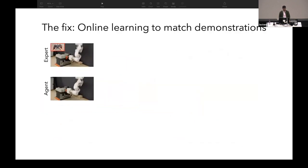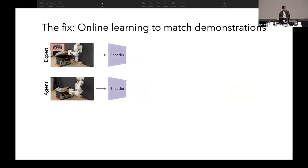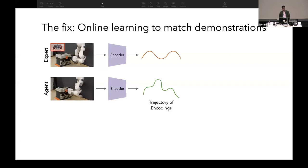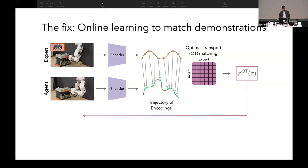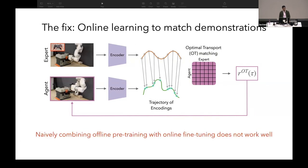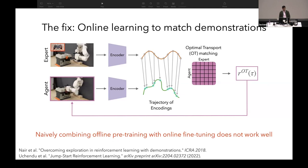What happens with behavior cloning on small datasets? Consider the task of opening a box. We provide a single expert demonstration using a joystick and train a behavior cloning policy on this. The BC policy successfully completes the task when starting from the same initialization as the demonstration. However, if the initialization varies even a little bit, the BC policy struggles — this is the commonly known distributional mismatch problem.